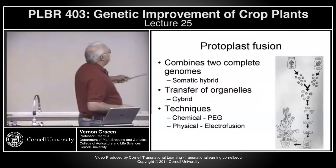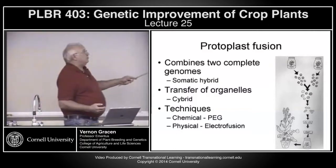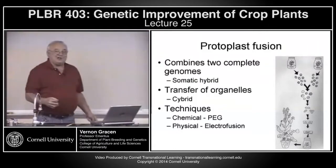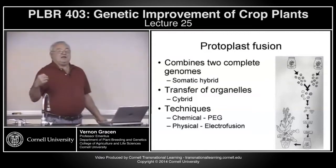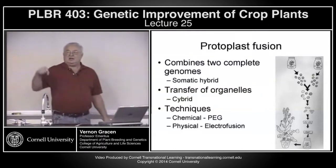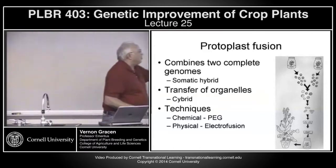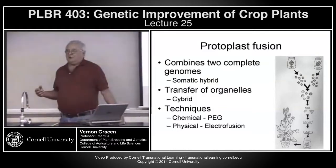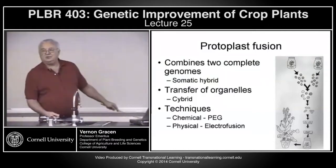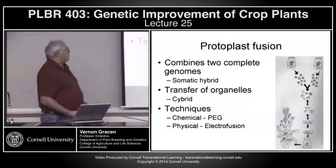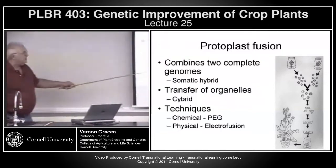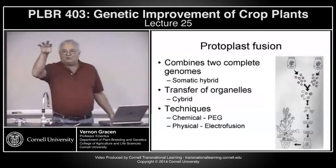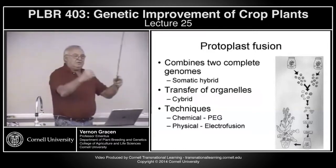Protoplast fusion allows making a somatic hybrid, which takes the nucleus and organelles from each parent and combines them. You can also make a cybrid — a cytoplasmic hybrid — where you knock out the function of one nucleus to get one nuclear background with both types of organelles. In cytoplasmic male sterility, you can transfer mitochondria that control male sterility into a restoring or non-restoring background very rapidly. This can be done using polyethylene glycol or electrofusion technology, which sends a small electric current through the plasma membrane making membranes adhere and cells fuse.